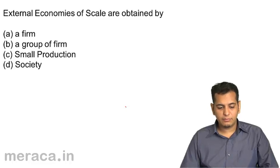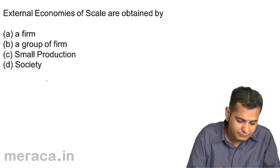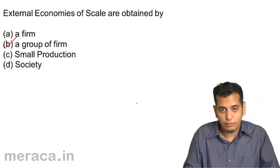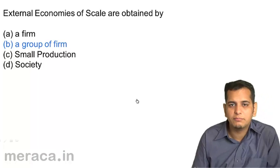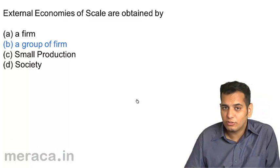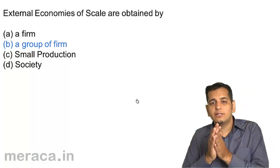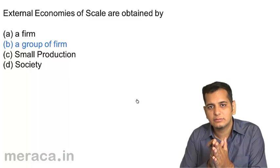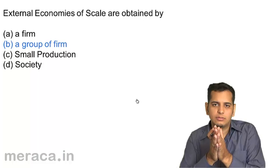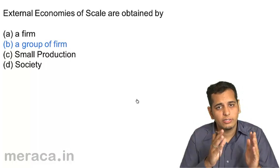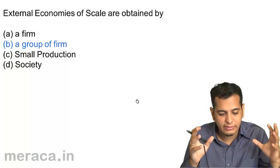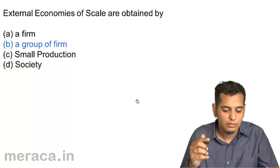External economies of scale are obtained by: a) a firm, b) a group of firms, c) small production, d) society. The answer is a group of firms. External factors accrue to the whole industry, not only to a single firm. Since these factors are beyond the control of the firm, if the industry gets better transport facilities or skilled labor, the whole industry benefits — so external economies of scale accrue to the whole industry or group of firms.